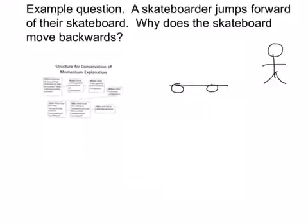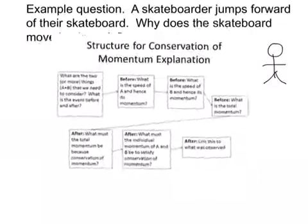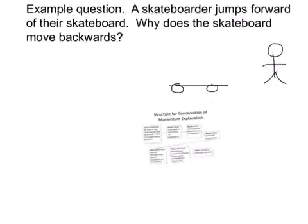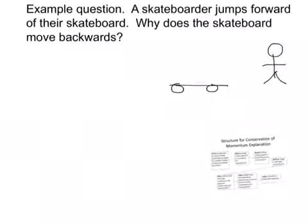The first thing is to decide what the two objects are that we need to consider, and what is the event. In this case, fairly obviously, the two things we need to consider are the skateboarder and the skateboard, and the event we need to consider is the boarder jumping off.